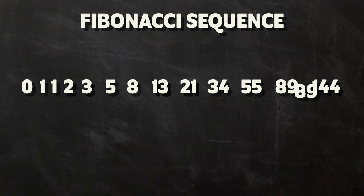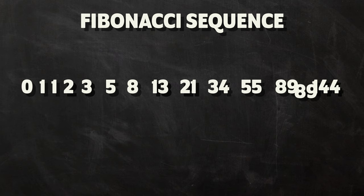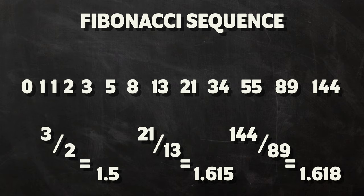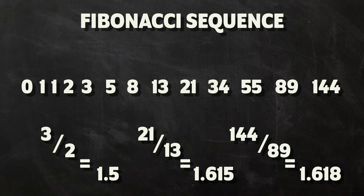The Fibonacci sequence is basically a series of numbers where every number is made up by adding the previous two numbers together. By taking the ratio of successive Fibonacci numbers, you can get closer and closer to the golden ratio.